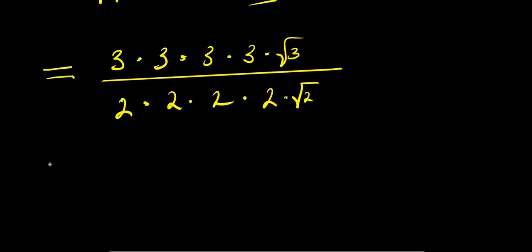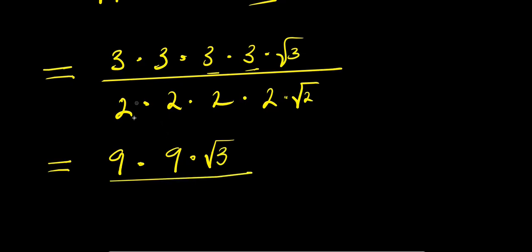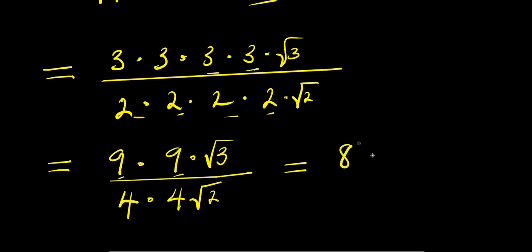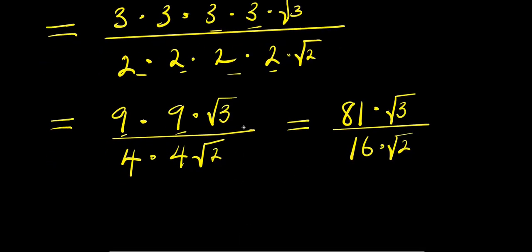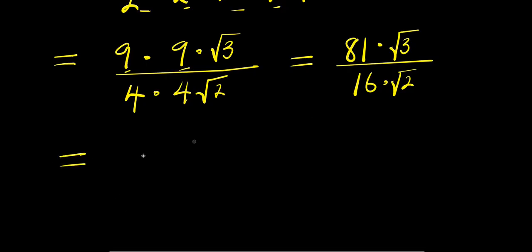So, multiplying this out: we have 3 times 3, that is 9, times 3, times 3, giving 9 times root 3 in the numerator; and 2 times 2, that is 4, times 2, times 2, giving 4 times root 2 in the denominator. And from here, 9 times 9 is 81, and we have 81 root 3; and 4 times 4 is 16, so we have 16 root 2.